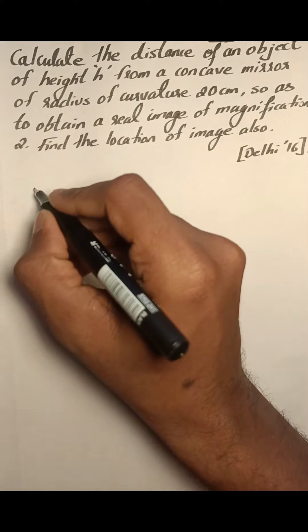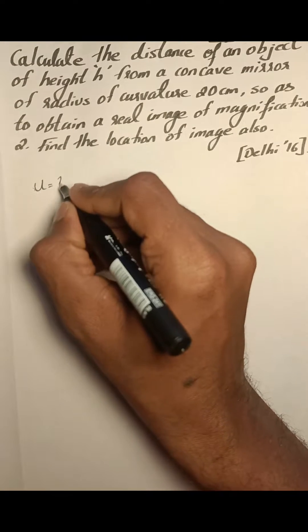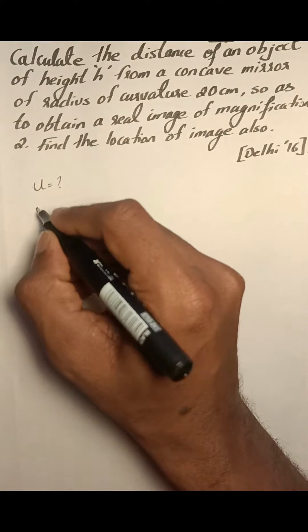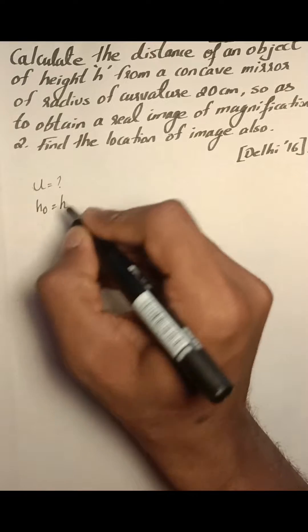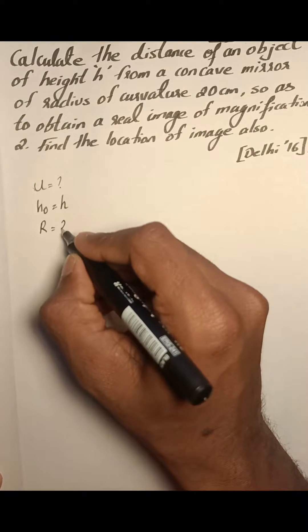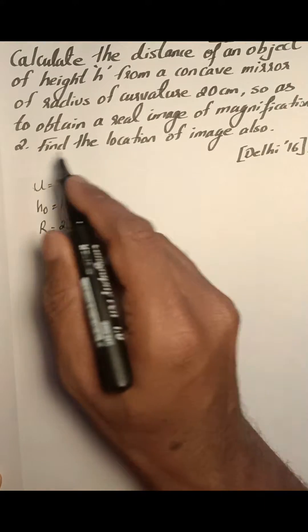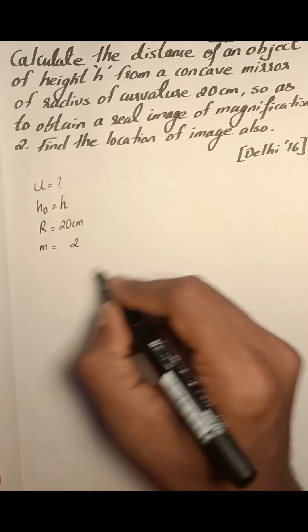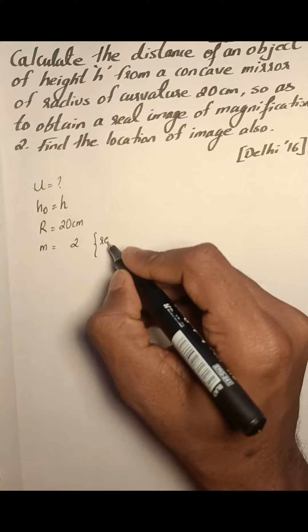Calculate the distance of an object. We need to find out the object distance u of height h from a concave mirror. The height of the object is given as h, radius of curvature is 20 centimeters, and we need to obtain a real image of magnification 2. So the magnification is 2 and the image is real.